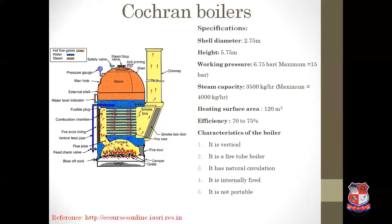There is a combustion chamber. On one side of the combustion chamber, a fire brick lining is provided, and on the other side, multiple fire tubes are provided. When hot gases come to the combustion chamber, due to the fire brick lining there is a deflection of hot gases, and because of this deflection, hot gases pass through the fire tubes. After passing through the fire tubes, they come to the smoke box, and from the smoke box, waste gases go to the chimney and into the atmosphere.